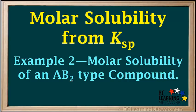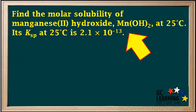In this video, we'll do an example where we'll calculate the molar solubility of an AB2 type compound given its Ksp. We're asked to find the molar solubility of manganese 2 hydroxide at 25 degrees. Its Ksp at 25 degrees is given as 2.1 × 10⁻¹³.